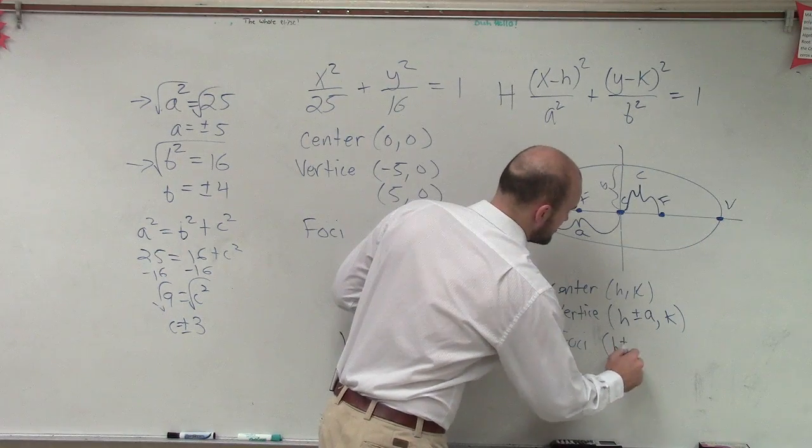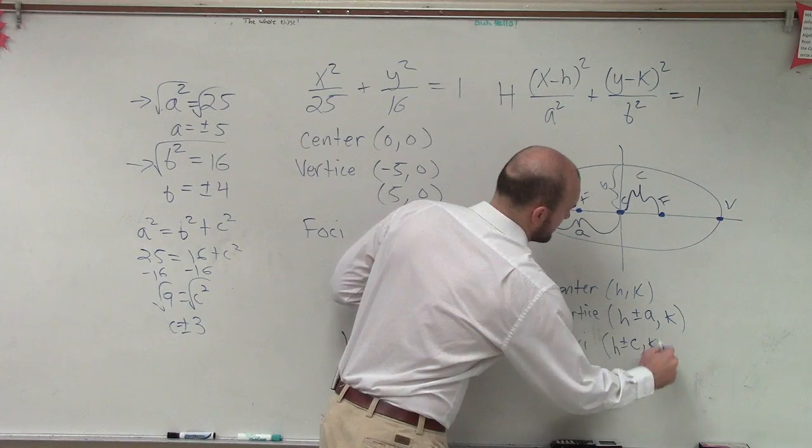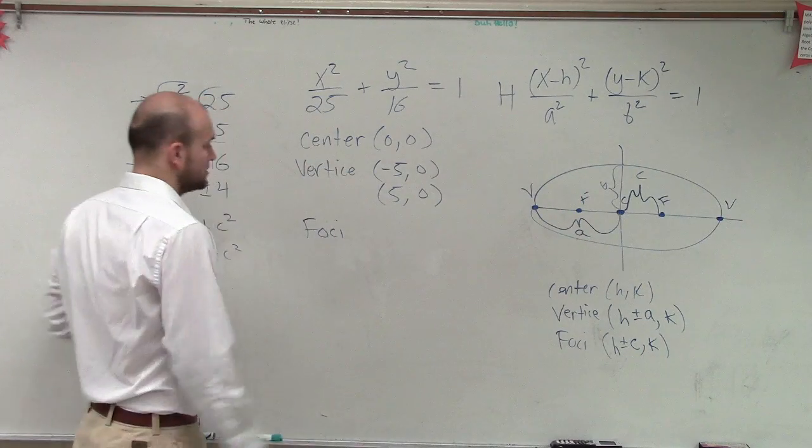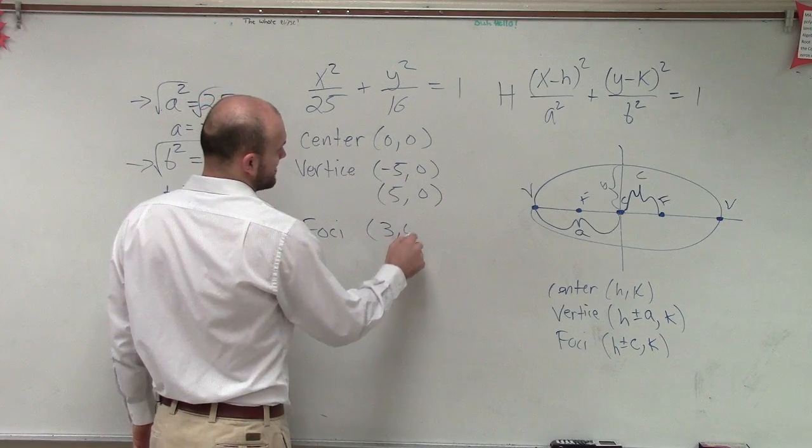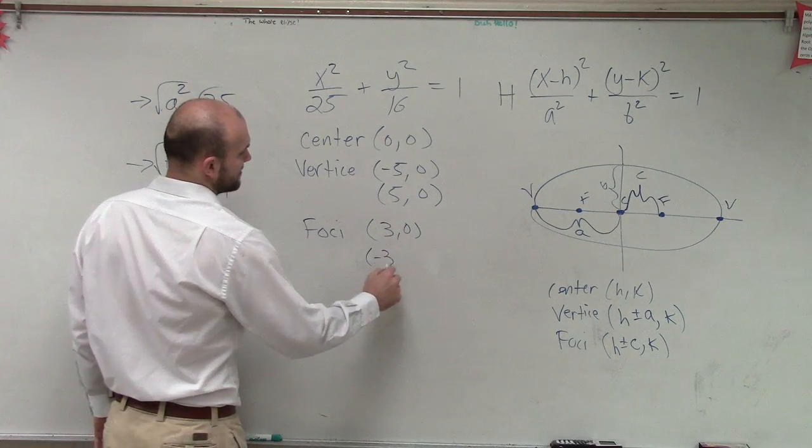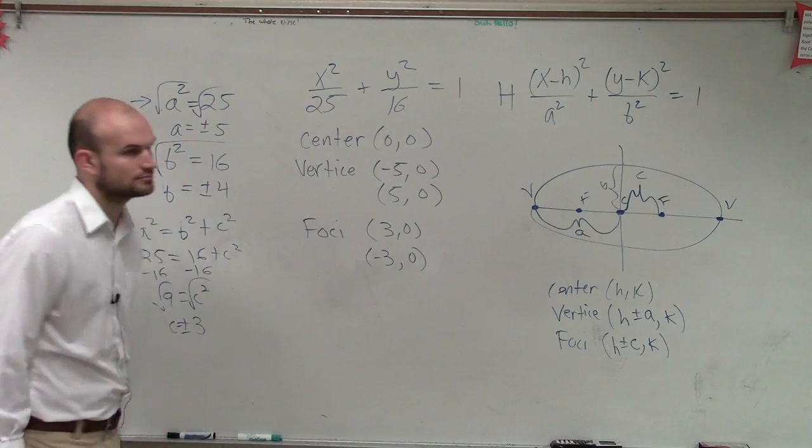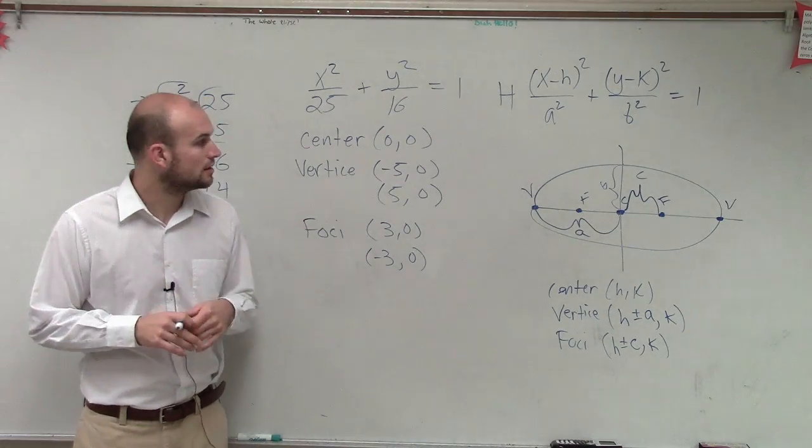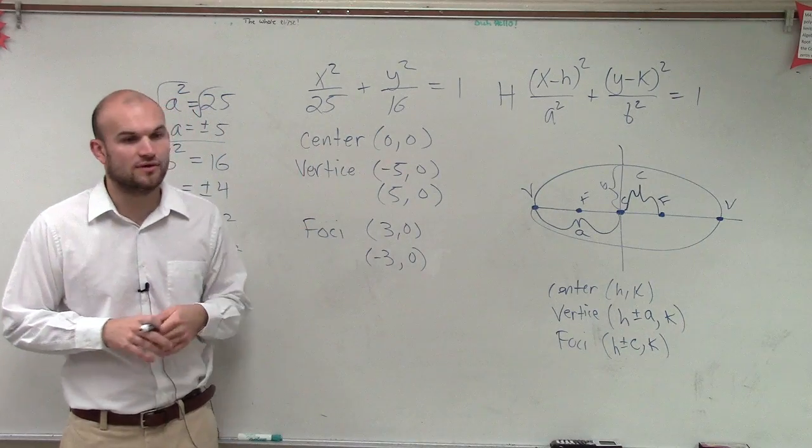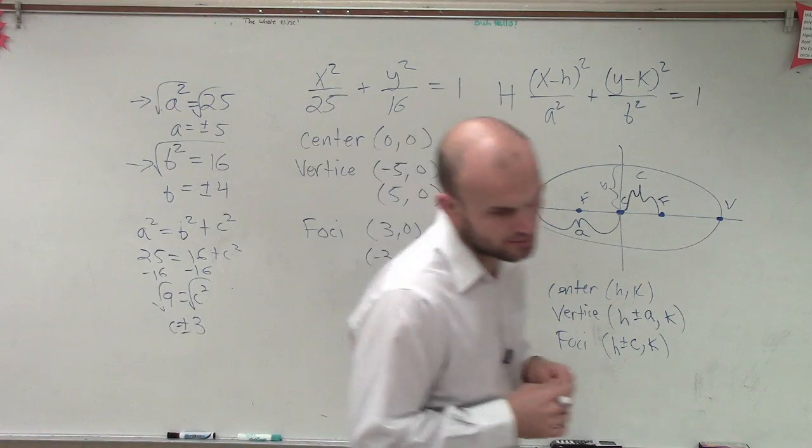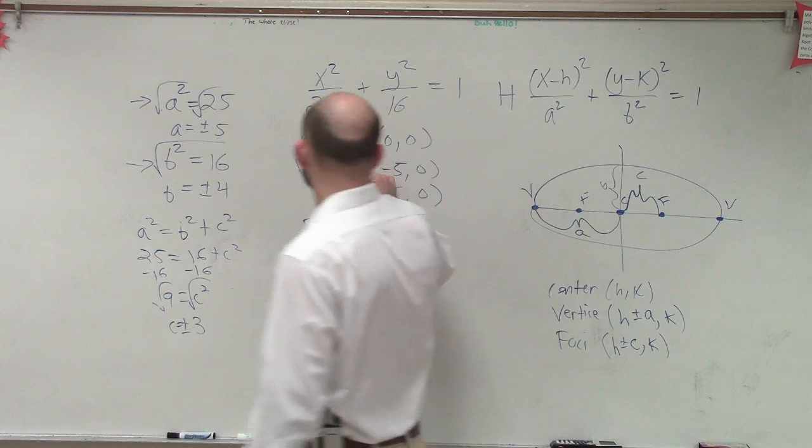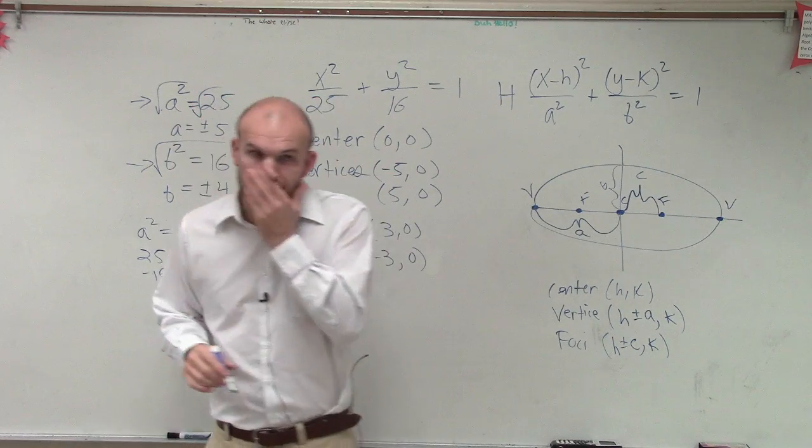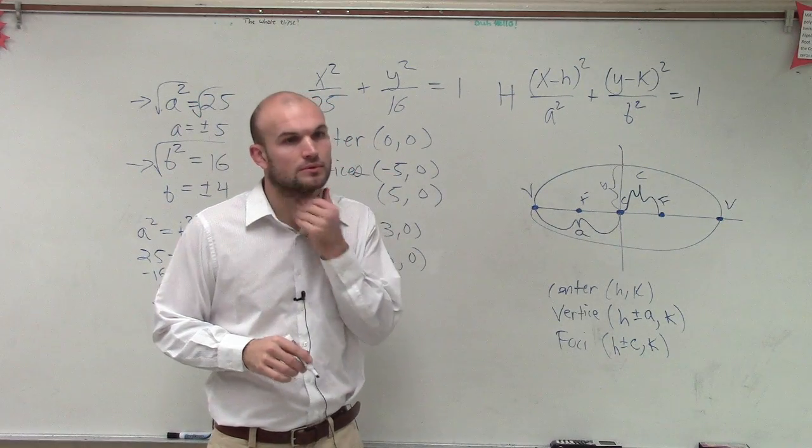So, now I'm going to do H plus or minus C comma K. So, in this case, I'm just adding plus or minus 3. So, I have 3 comma 0 and negative 3 comma 0. And that's how you find the center, the vertices, and the foci. Okay, questions?